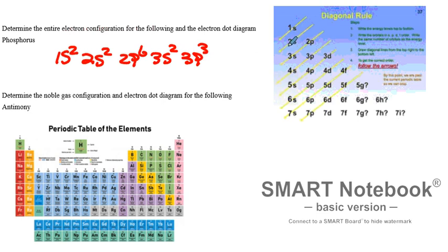So we have 1s2, 2s2, 2p6, 3s2. And then we're ending at 3p3. That's a total of 15 electrons. 2 plus 2 is 4. Plus 6 is 10. Plus 5 is 15.